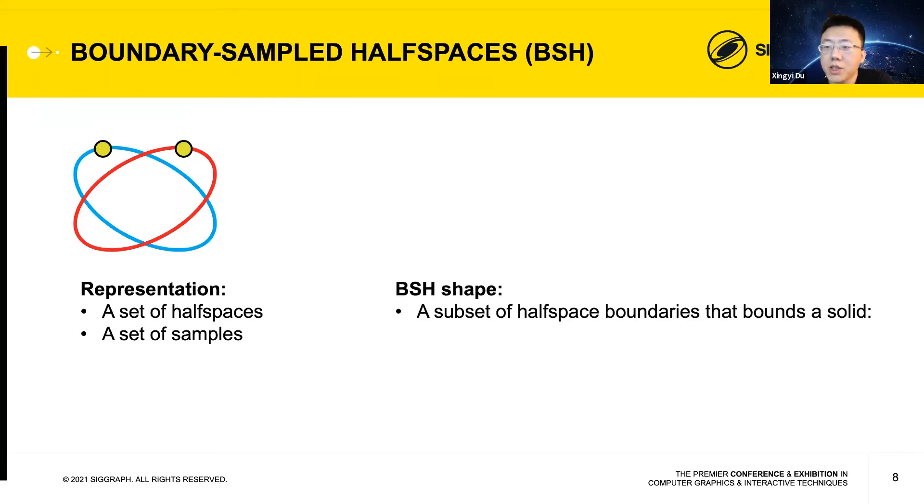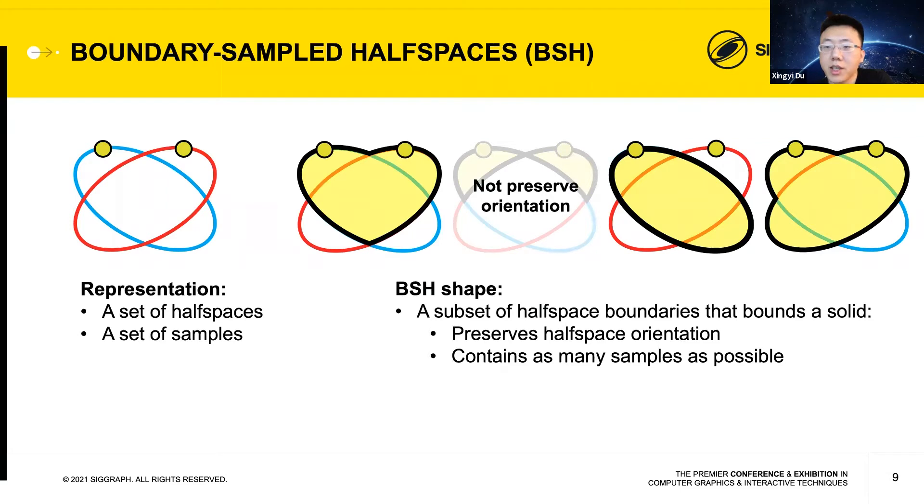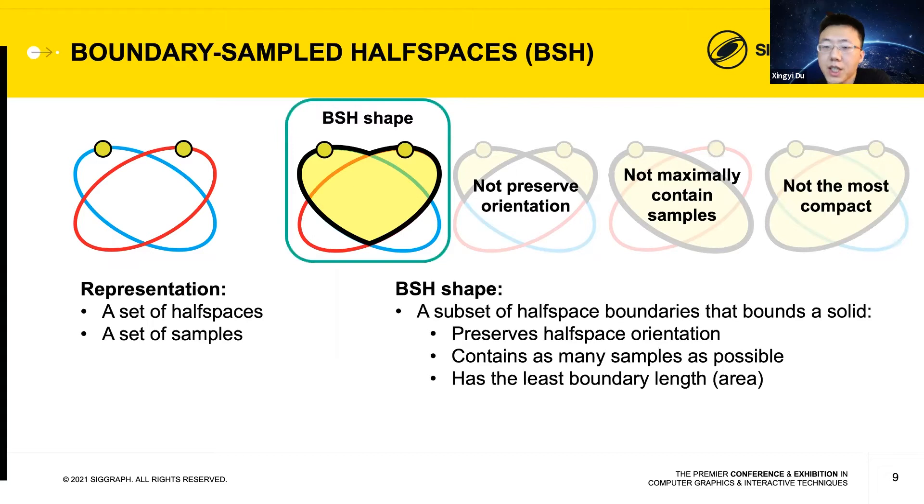Our shape, which is called boundary sampled half spaces, or BSH in short, is defined as a subset of the half space boundary that bounds a solid shape. While there are many possible such subsets, such as the ones shown here, the subset we are looking for satisfies the following requirements. First, it should preserve half space orientation. This eliminates the second shape. Next, it should contain as many samples as possible, which eliminates the third shape since it only contains one sample. Last, the shape should have at least boundary length in 2D or boundary area in 3D. This favors a more compact solid shape. While these criteria are sufficient to define the desired shape in this example, we have observed that they could lead to artifacts that are common in other examples, which I'll show in the next slides.